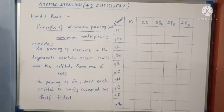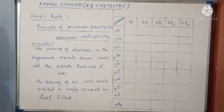Likewise, when you consider the D orbital, there are 5 orientations in the D orbital. So only the sixth electron can get paired with the first electron — that is the meaning of Hund's Rule.